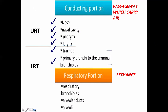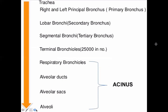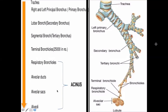From the trachea, the airway divides into the left and right primary bronchi, then secondary, tertiary, and terminal bronchioles before entering the respiratory portion. The acinus is made up of respiratory bronchioles, alveolar ducts, and alveolar sacs, collectively called an alveolar lobule. An important skill is being able to differentiate bronchus from bronchiole histologically.